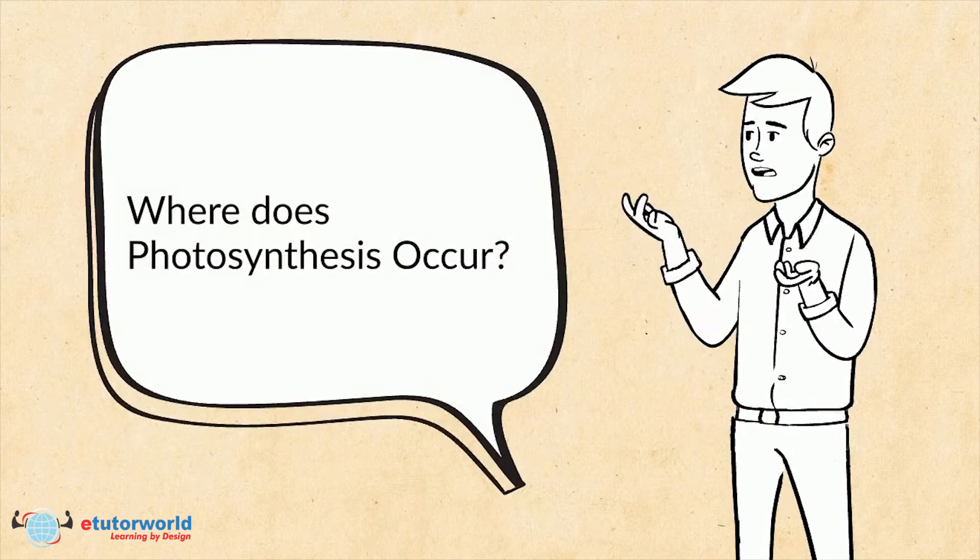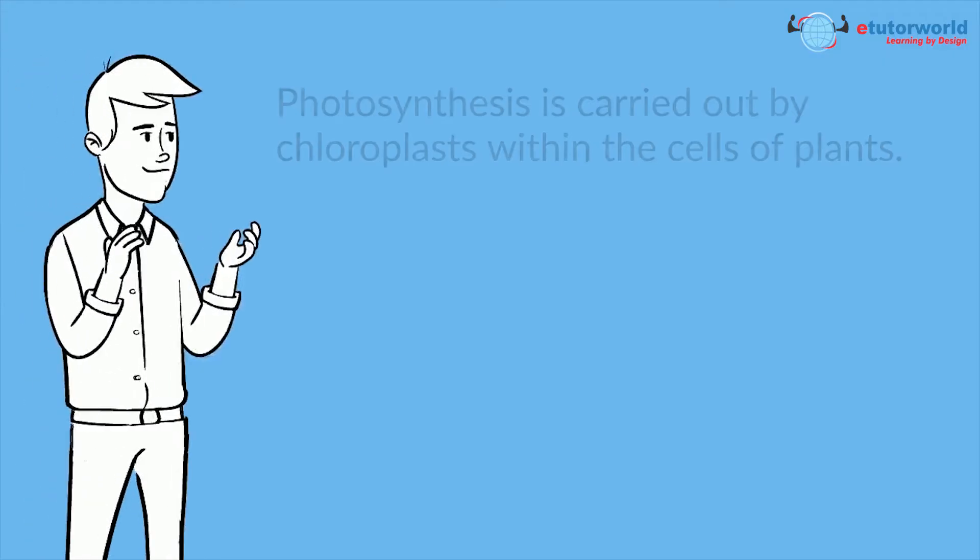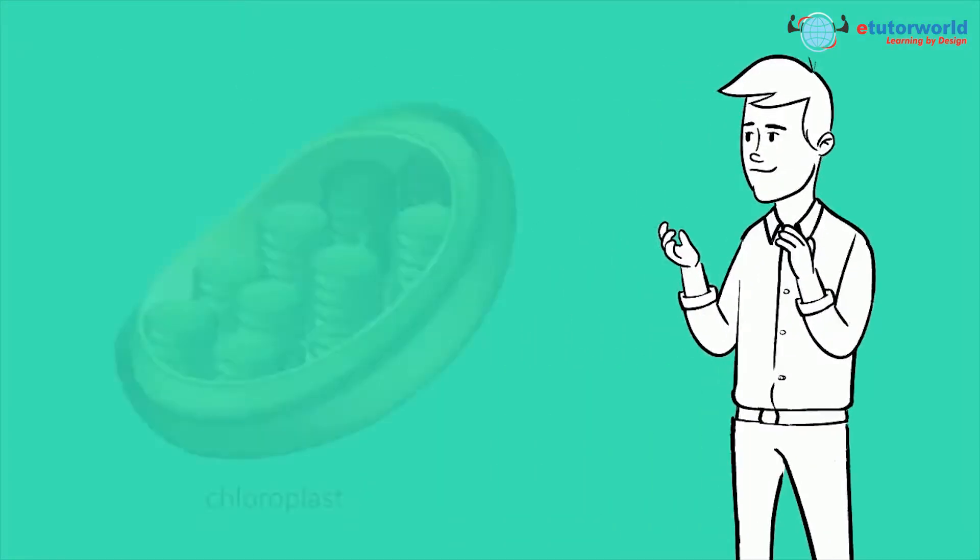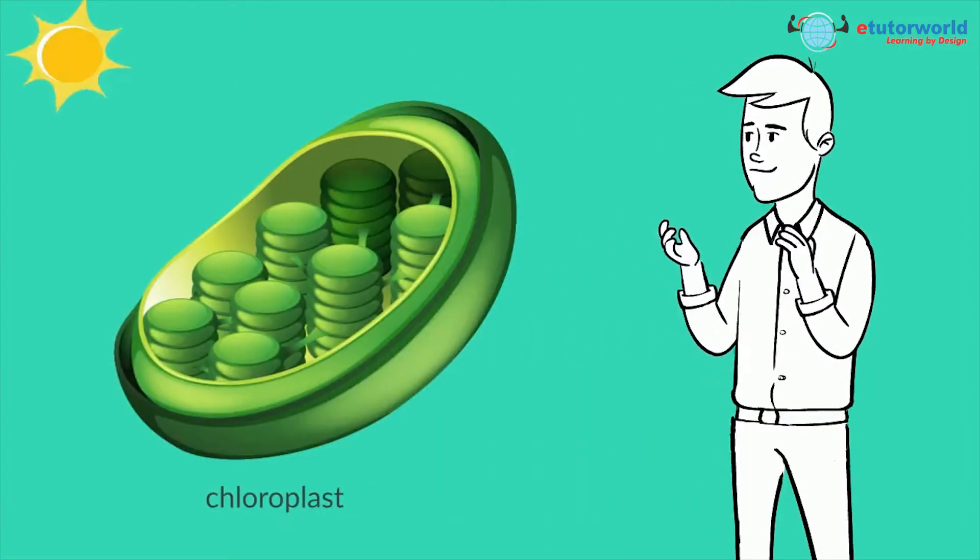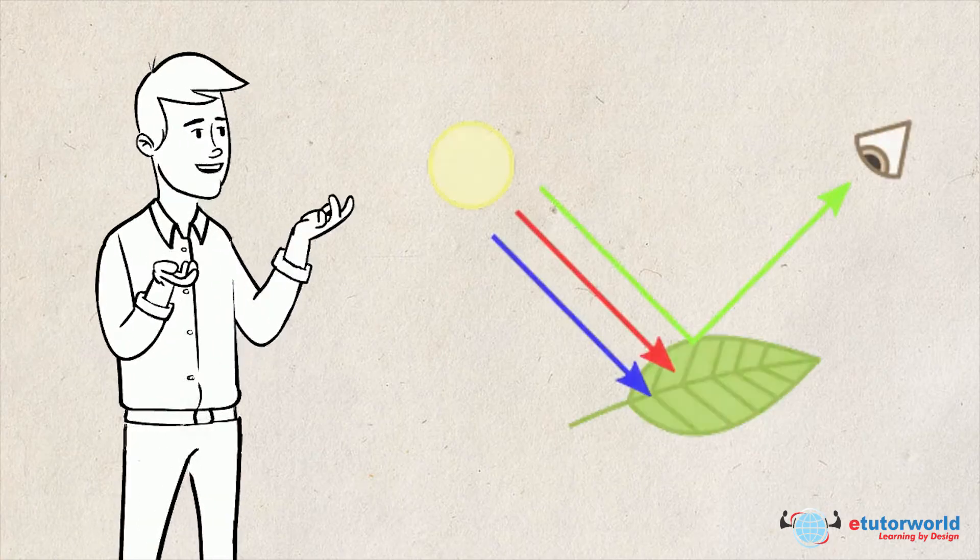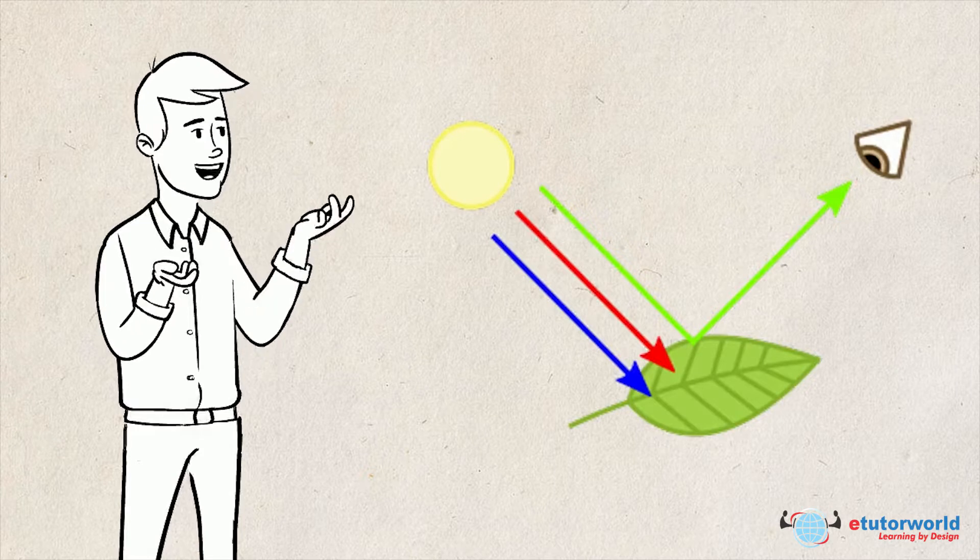Where does photosynthesis occur? Photosynthesis is carried out by chloroplasts within the cells of plants. Chloroplasts contain chlorophyll, which absorbs the sun's energy. The photons in light hit the electrons in the chlorophyll to generate energy.